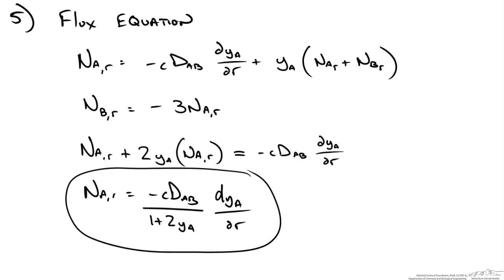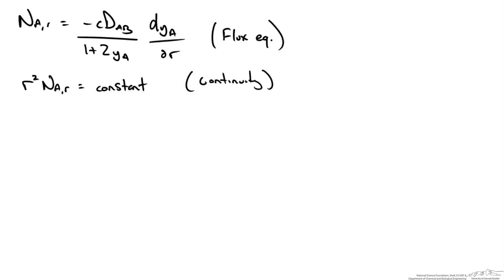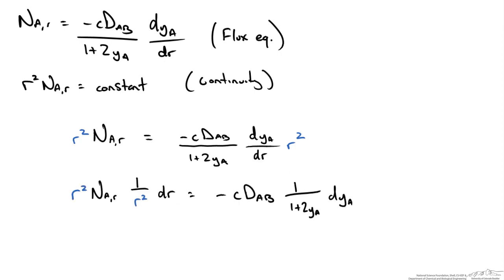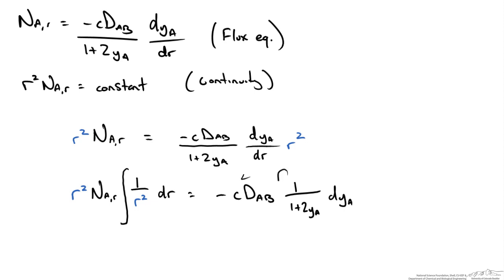Now we combine the flux expression with the continuity equation result. Since r² · N_Ar must equal a constant, we multiply both sides of the flux equation by r². This allows us to separate variables and set up integrals. The r terms go to the left side. Since r² · N_Ar is constant, it comes outside the integral on the right. Assuming constant total gas concentration C and diffusivity D_AB, we set up our integrals.